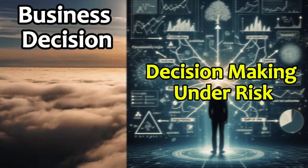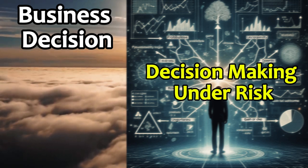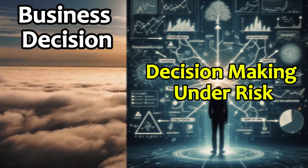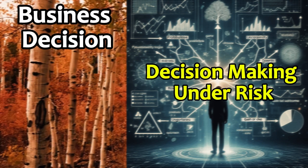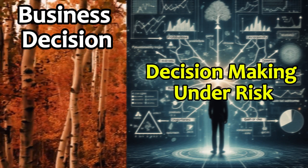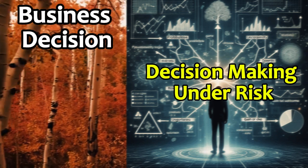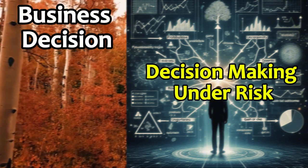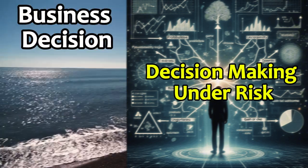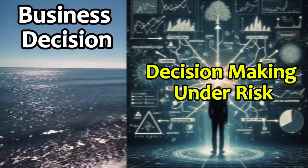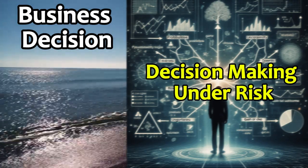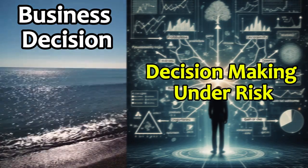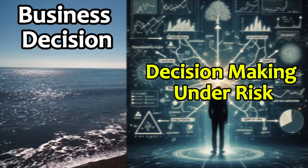Decision-making, simply described as making choices among multiple alternatives, is a future-oriented action. Decision theory utilizes certain knowledge and techniques to deal with the best decision-making under unknowns of the future. Very few things in life can be taken as certain, and uncertainty is the reality of life. The degree of certainty has two extreme points: complete certainty and complete uncertainty. The region between these two points refers to decision-making under risk.